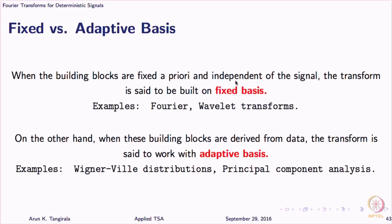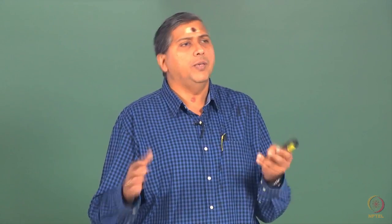The Wigner-Ville distribution is not really a transform — it basically looks at energy decomposition. PCA is a very common tool. You should not think that adaptive basis is always superior to fixed basis, or that adaptive basis will always figure out correctly what the signal is made up of. There are merits and demerits to both these approaches. In the fixed basis approach, for example, Fourier analysis, which is what we are going to focus on — as I said — assumes that any signal you give to me is made up of sines and cosines.